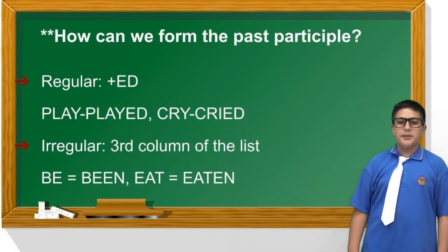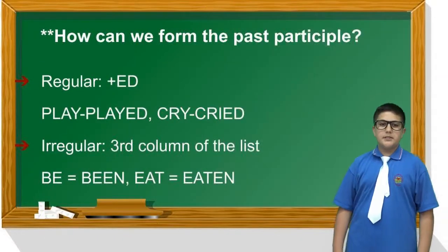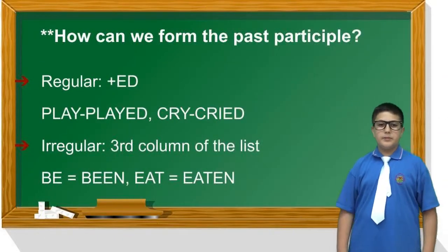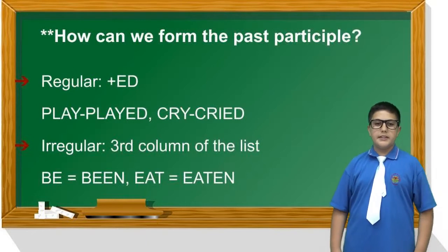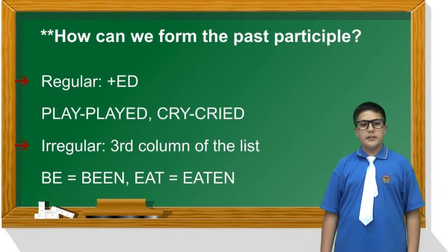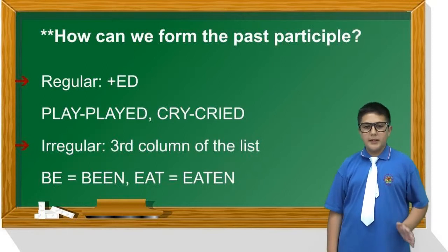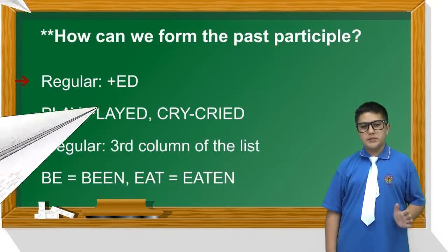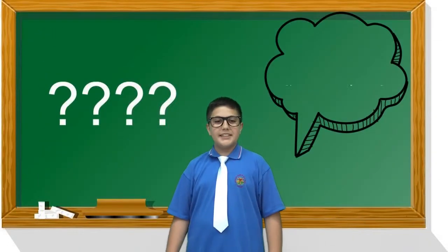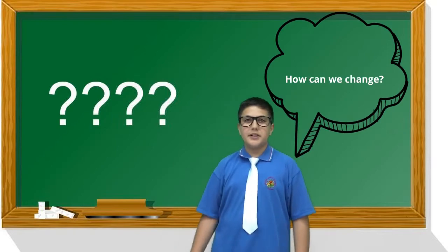For example, regular verbs are formed by adding 'ed': 'play' becomes 'played', 'cry' becomes 'cried'. Watch out — the spelling is important. How can we change a sentence from active to passive?